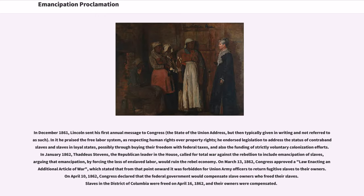In December 1861, Lincoln sent his first annual message to Congress, the State of the Union address. In it he praised the free labor system as respecting human rights over property rights, he endorsed legislation to address the status of contraband slaves and slaves in loyal states, possibly through buying their freedom with federal taxes, and also the funding of strictly voluntary colonization efforts.